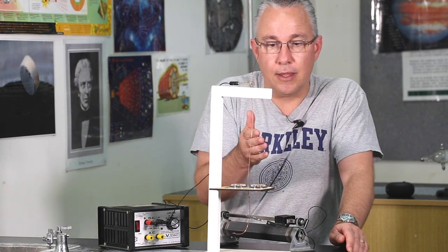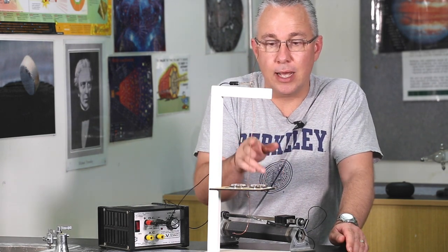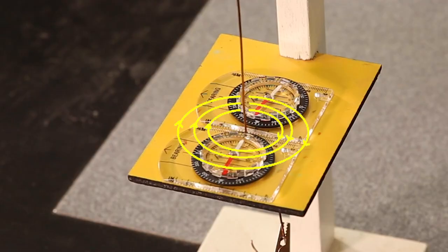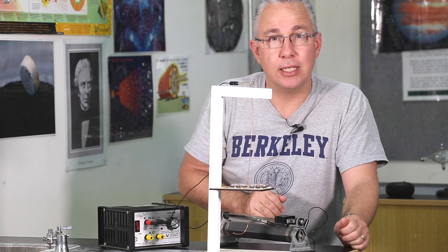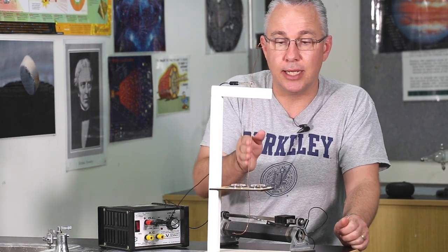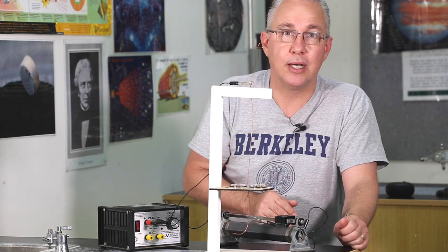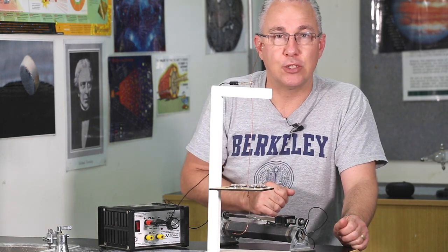So there you have it. The current bearing wire has a magnetic field, it's stronger towards the wire and weaker the further we are away. I hope that's helped you understand the nature of a current bearing wire's magnetic field. Thanks for watching.